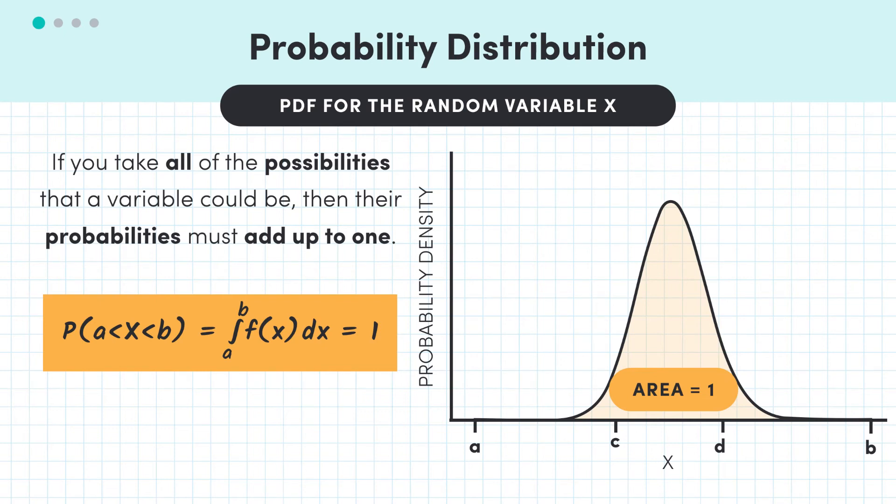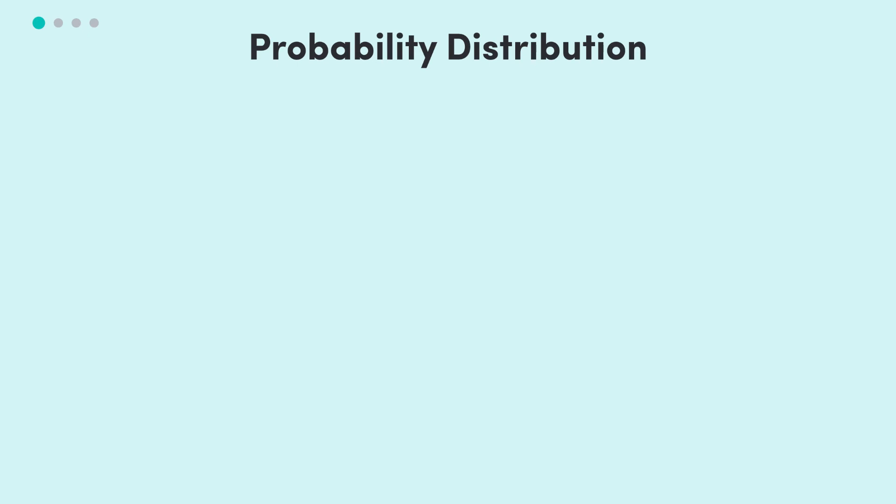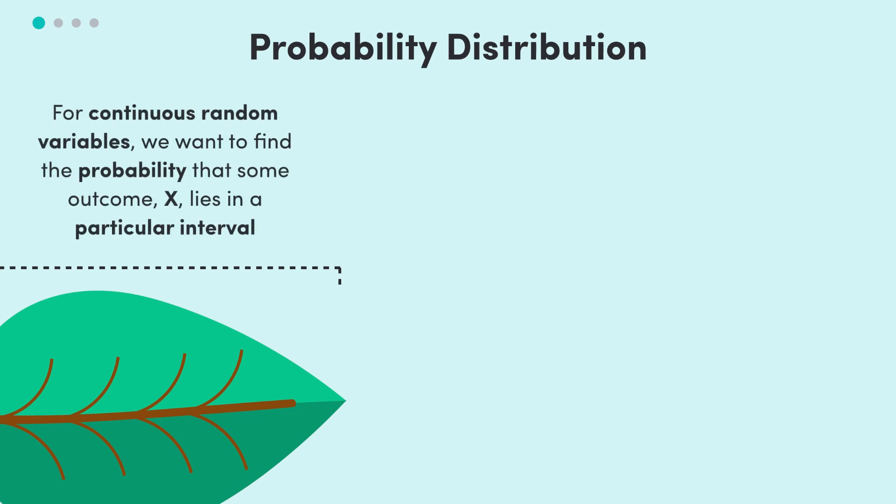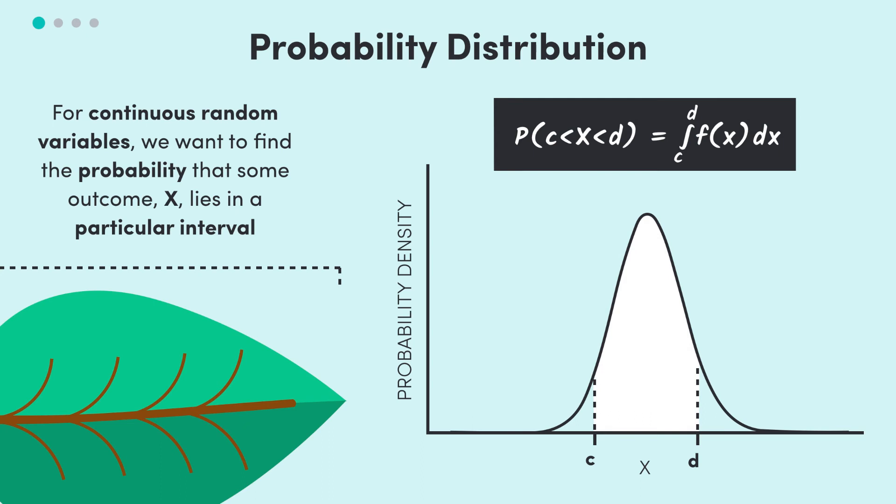So to recap everything that we've done here, instead of finding the exact probabilities of specific outcomes, like the probability that X is 5, for continuous random variables, we're interested in finding the probability that X lies in a particular interval, like X is between 6 and 8, and we find that probability by computing the area under the PDF between those values.